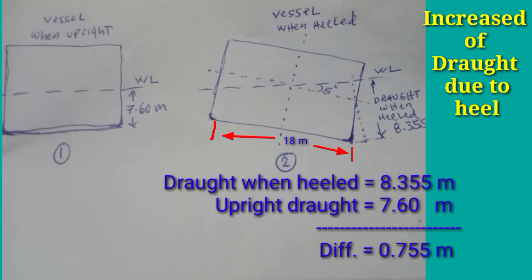So draft when heeled is 8.355 meters, upright draft is 7.60 meters, and the difference is 0.755 meters — this is the draft increase due to heel. Imagine if we had not applied this into our under-keel clearance calculation. This is a very significant effect on our bottom, especially when navigating in a narrow channel. We must always bear in mind to check the available depth of water to ensure we are on a safe passage when navigating in shallow waters.